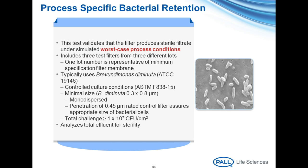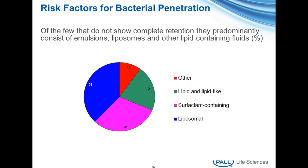In process-specific bacterial retention testing, the filter is tested under a scaled-down version of actual process conditions. It includes three test filters—testing in triplicate—from three different manufacturing lots, and usually must include a minimum specification membrane to cover the entire expanse of manufacturing quality. A 0.45 micron-rated penetration control filter is also tested, documenting the penetrative ability of the test organism. A minimum challenge of 10 to the 7th CFU per centimeter squared is applied, and the entire effluent is passed through a recovery filter. In almost all process-specific filter validations, complete retention is documented. The rare penetration events are predominantly a result of filtration of emulsions, liposomes, or other lipid-containing fluids—which is why it's important to address this risk early in process development.